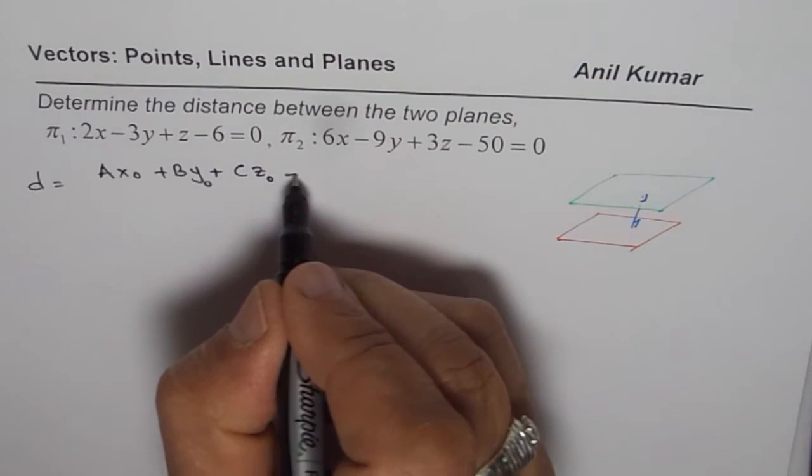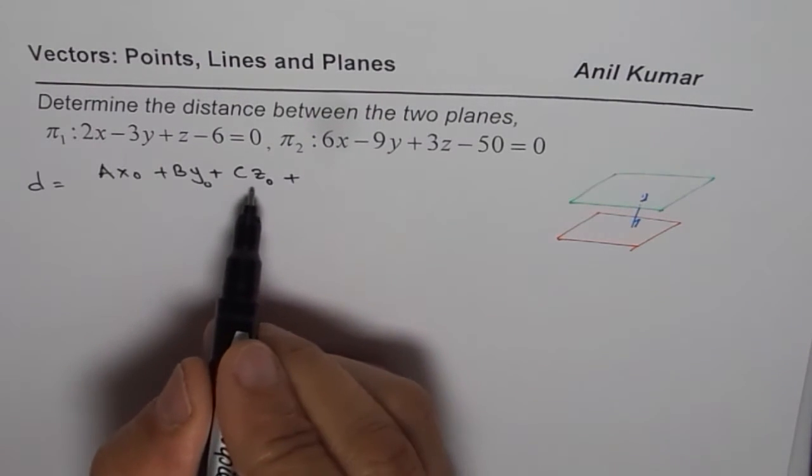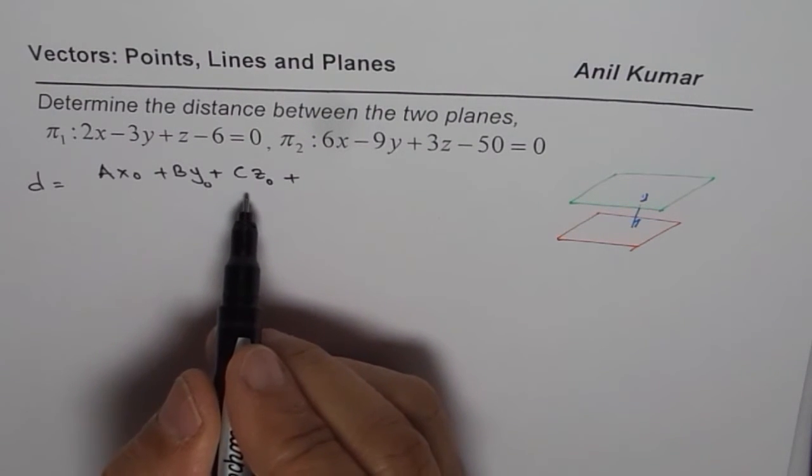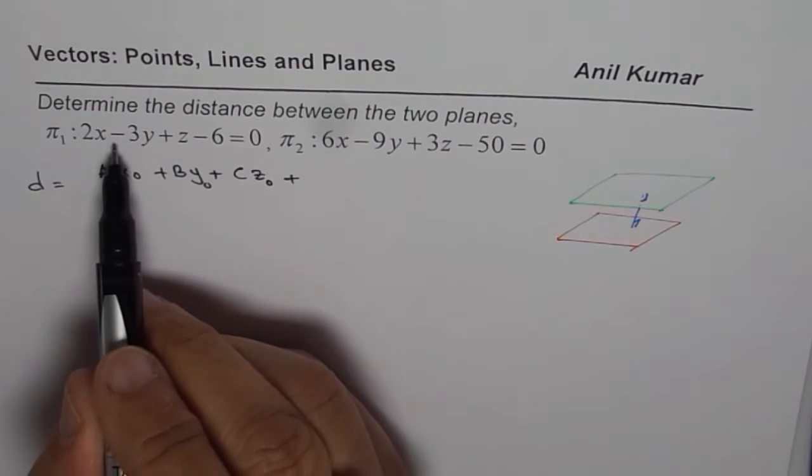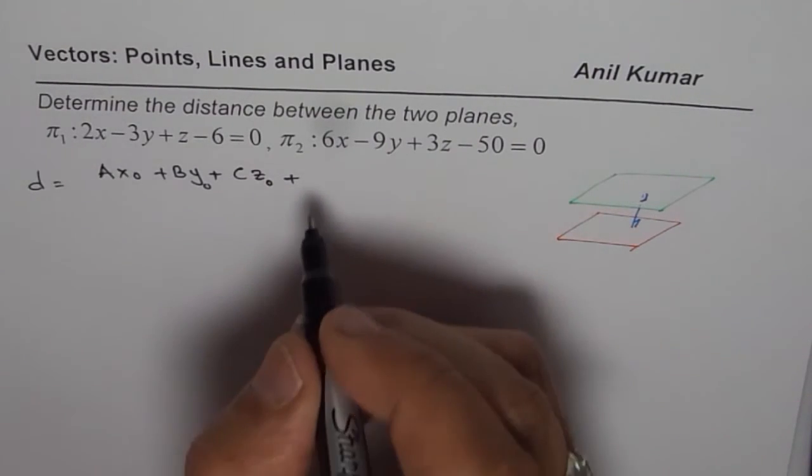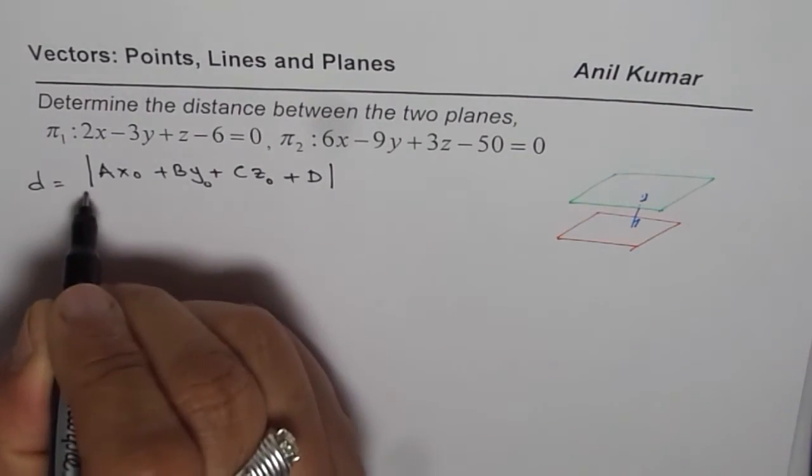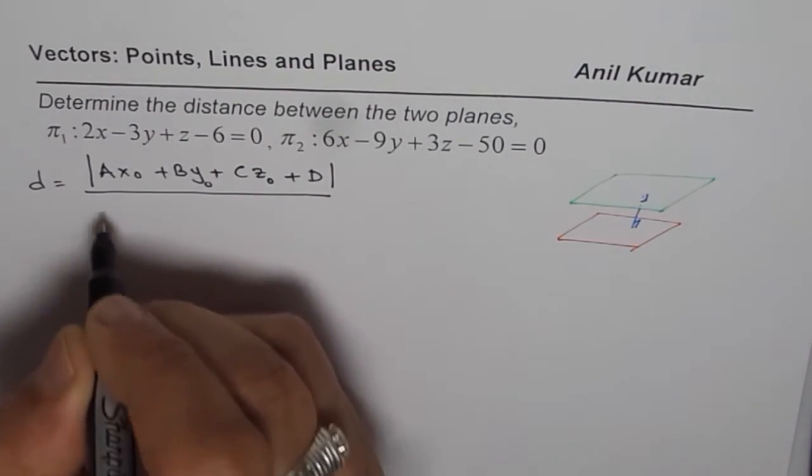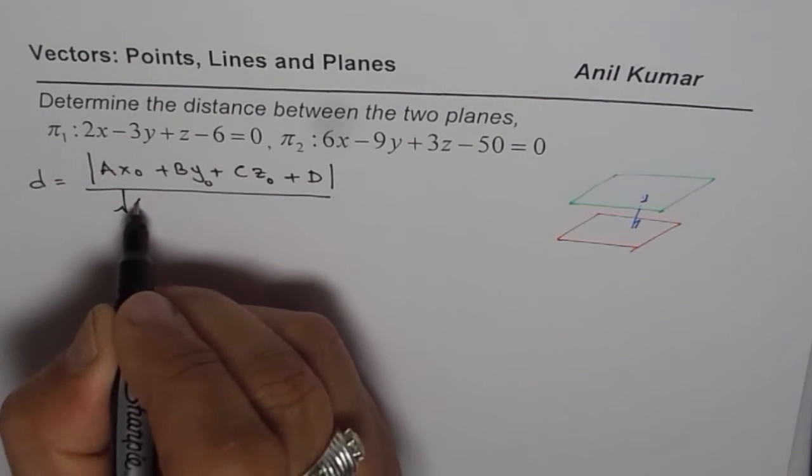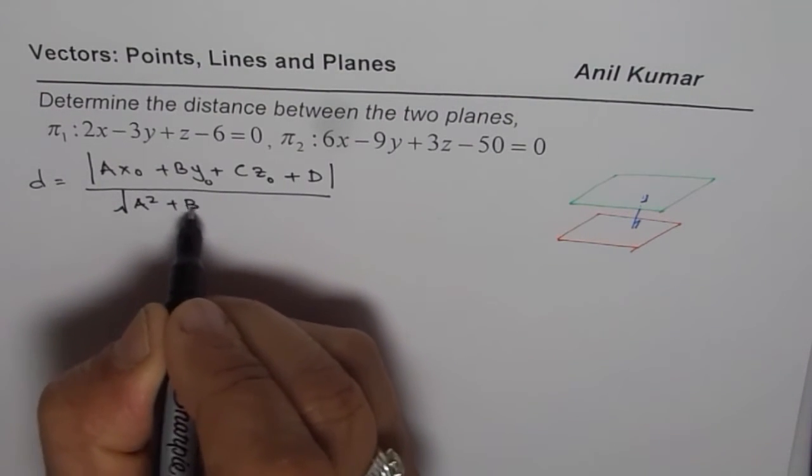The first equation, so we have (x, y, 0) are the coordinates of the points which we can find from the other plane plus D, magnitude of this divided by square root of a² + b² + c². So that's the formula to find the point.